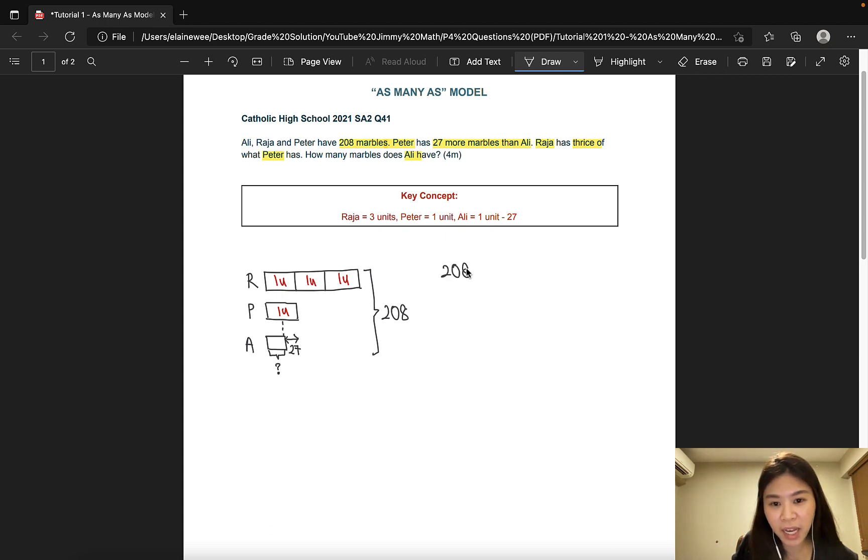So let's go ahead and add 27 to the total. And that would give us 235. What that means is 235 is 5 equal units now that Ali has one full unit. So 5U equals 235. One unit would be 235 divided by 5 and that would give us 47.